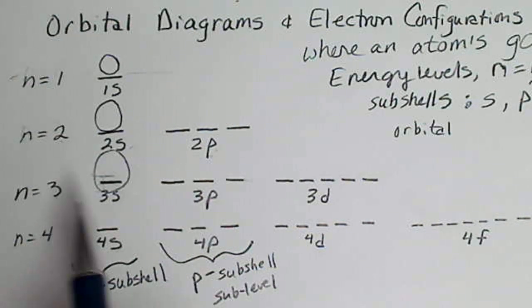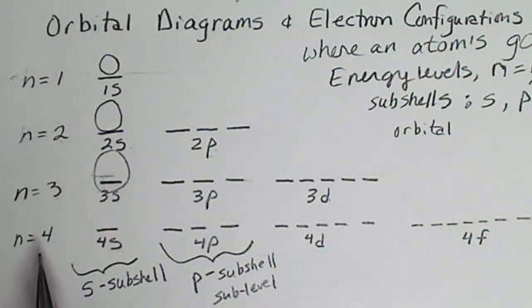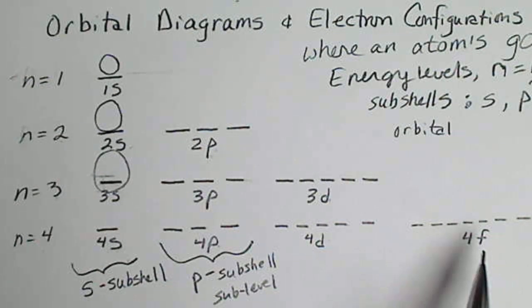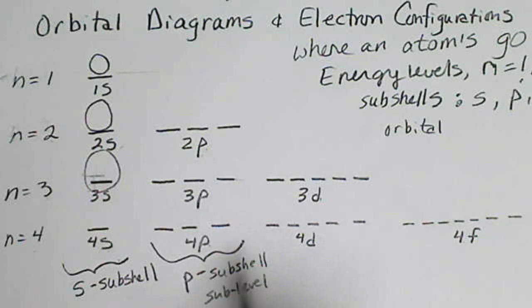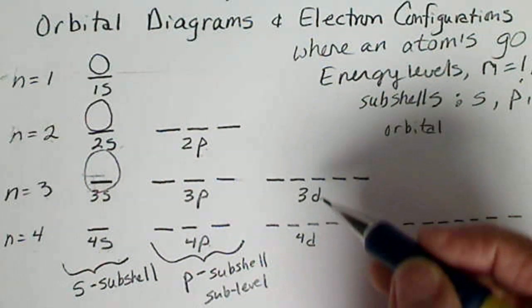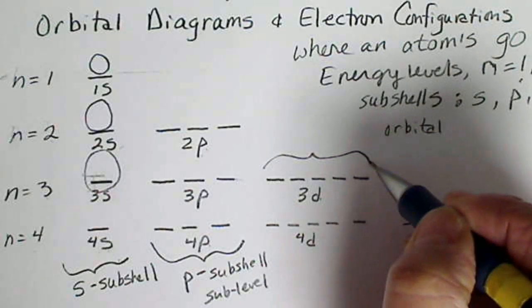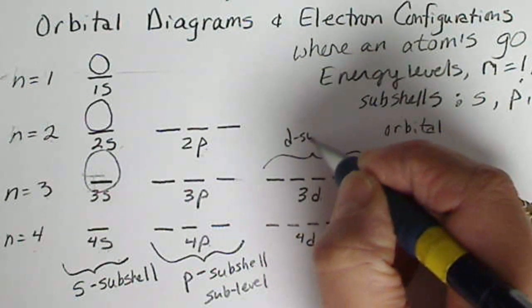When n equals 3, there's 1, 2, 3 subshells. When n equals 4, there's 1, 2, 3, 4 subshells. So this group is the P subshell, and then here this group is the D subshell.